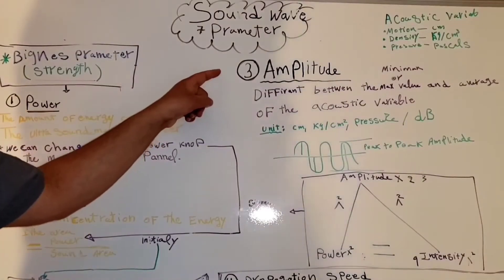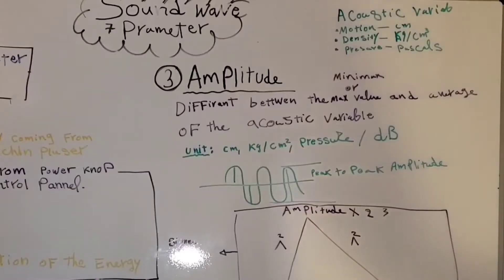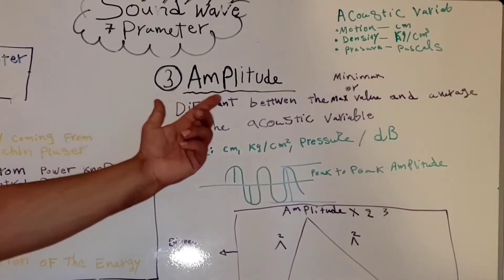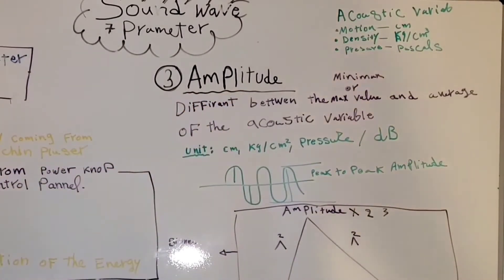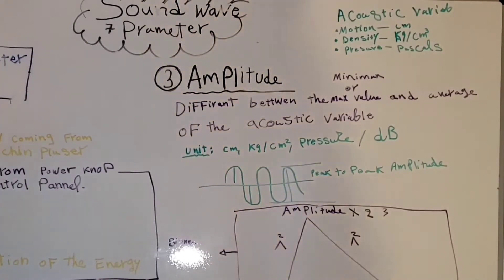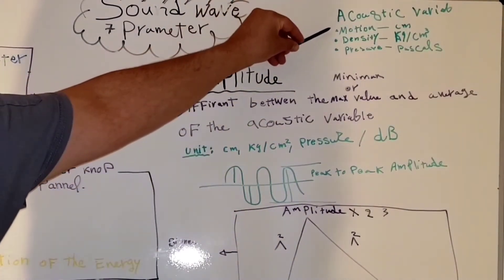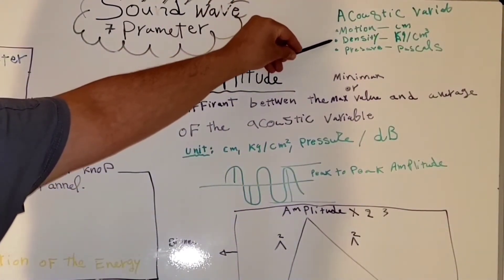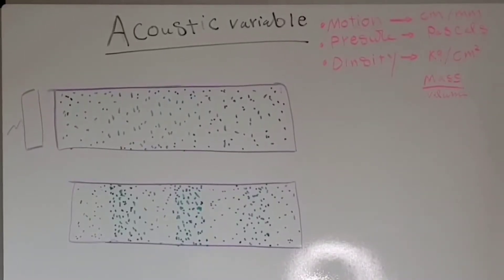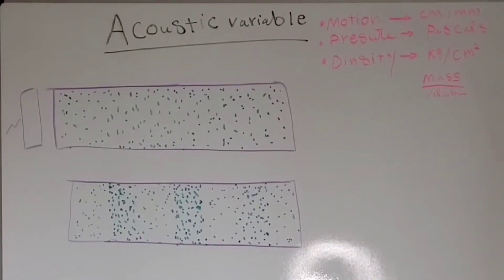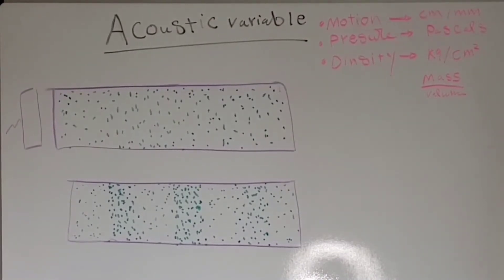Now we'll talk about the amplitude. The amplitude is the difference between the maximum value and the average of the acoustic variables. The acoustic variables are the motion, the density, and the pressure. To understand the amplitude and how to calculate it, we need to first understand the acoustic variables.